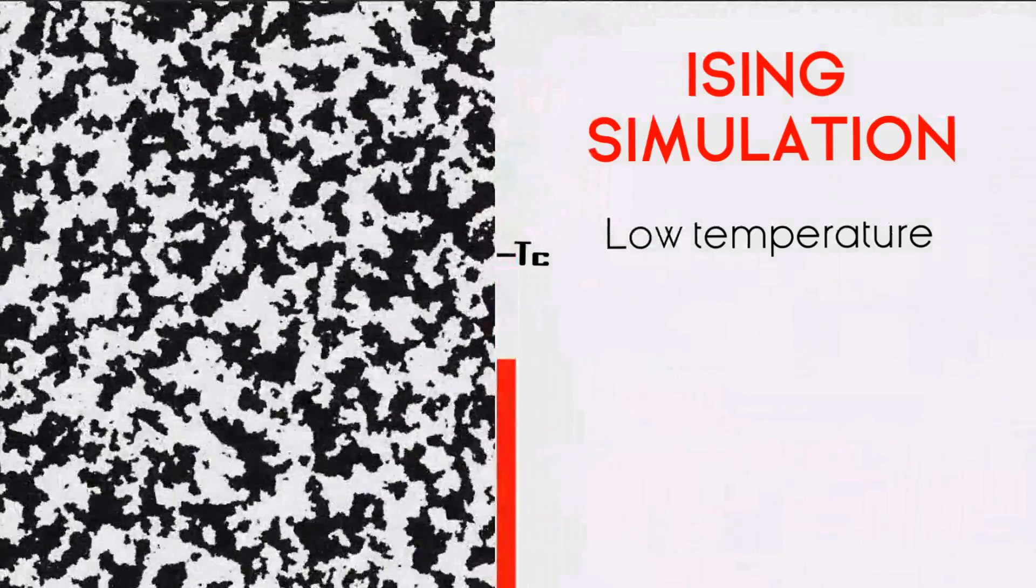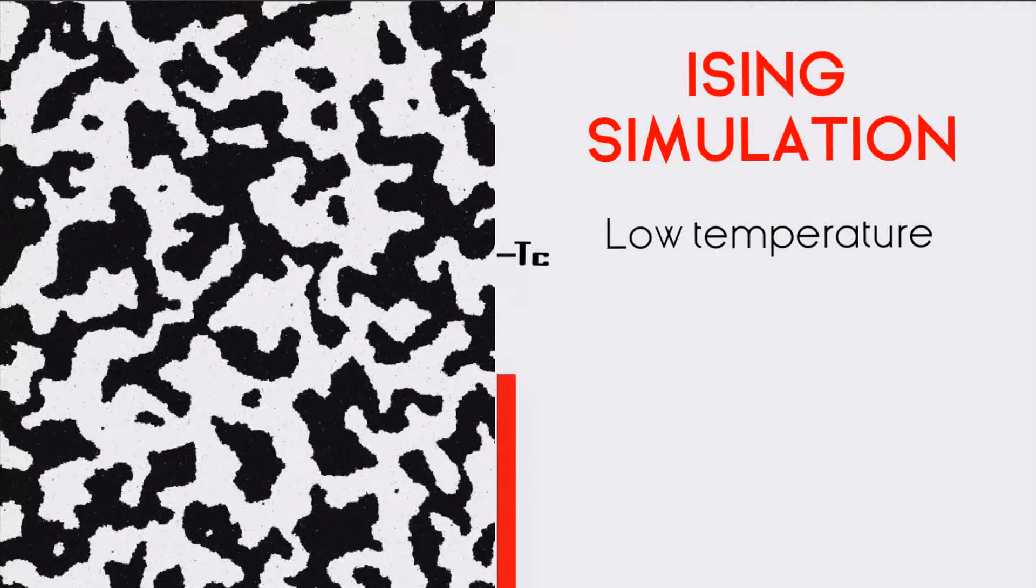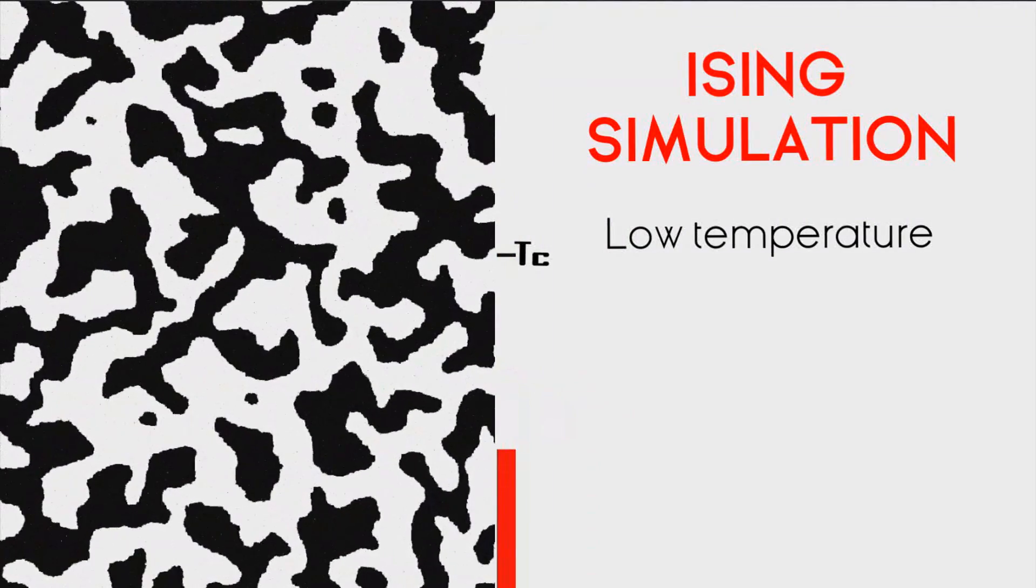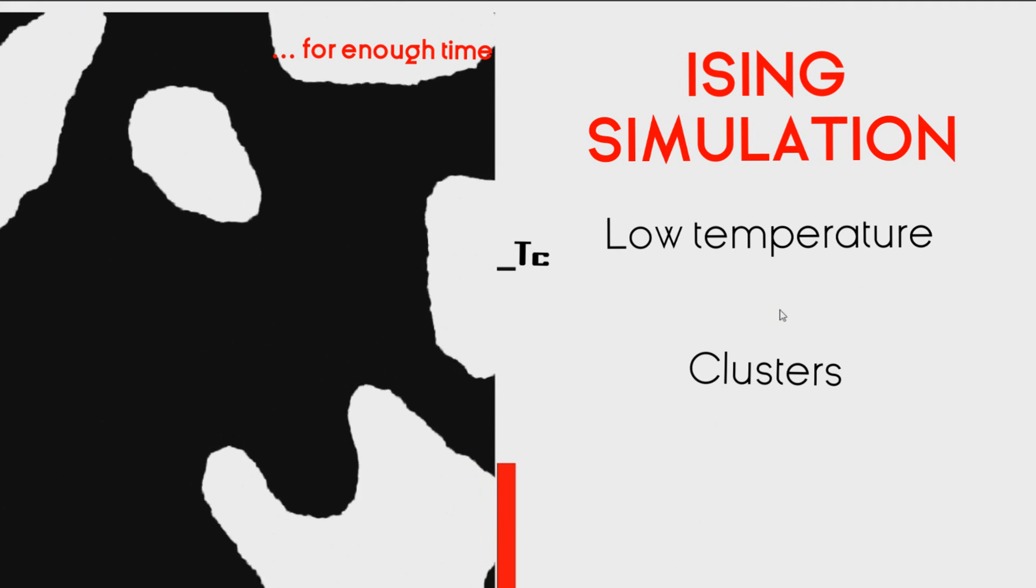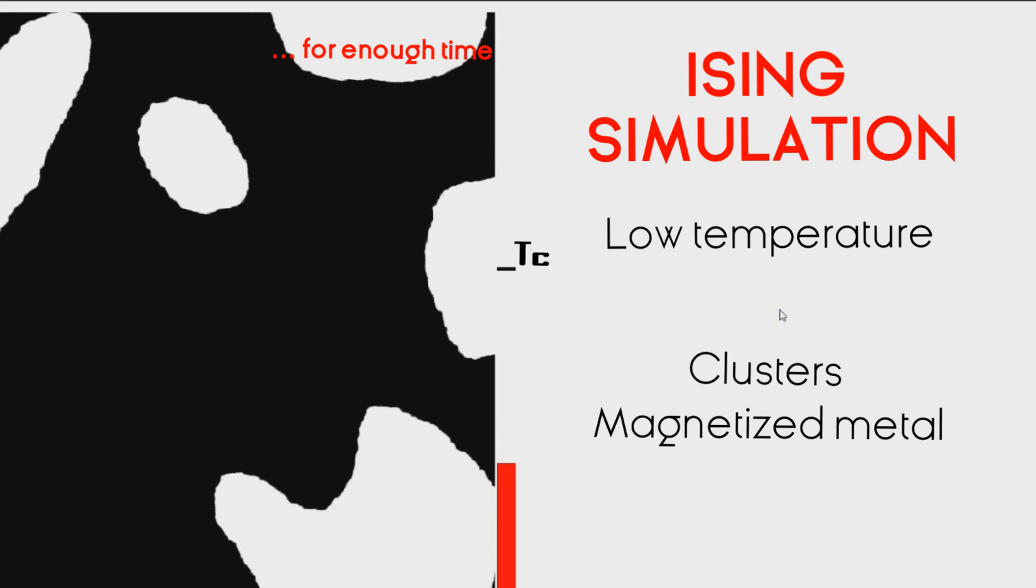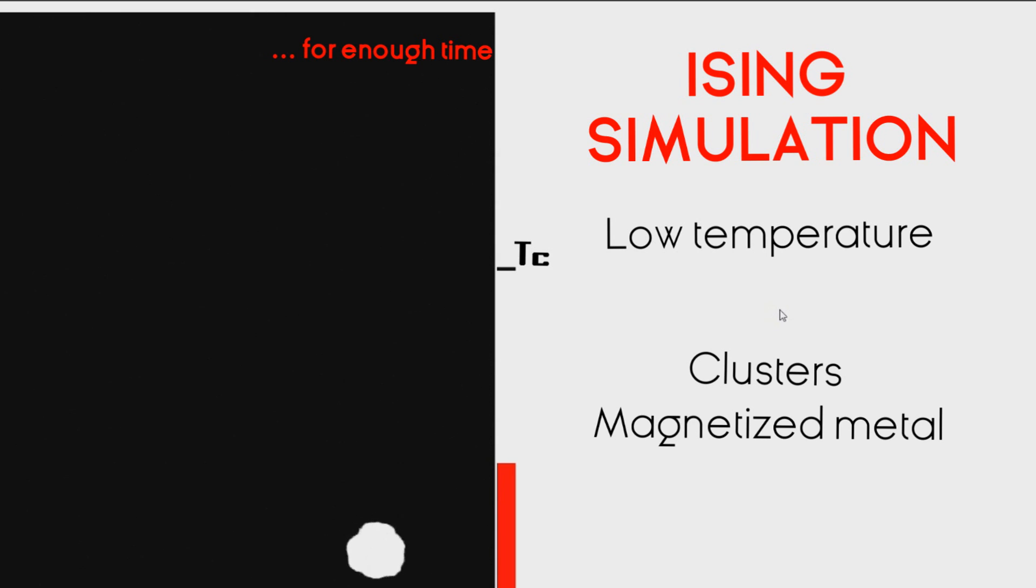However, as we reduce the system's temperature, we see that the spins start to stabilize. For temperatures lower than the critical temperature, the magnetization is different from 0, and big regions of spins start to align, despite layer fluctuations. Nevertheless, if we wait enough time, our metal will be fully magnetized either up or down. This is the ordered phase of lower entropy.